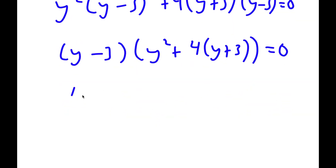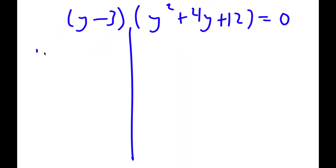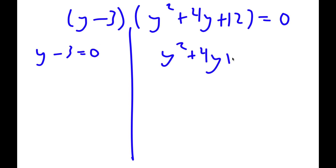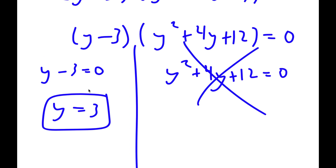From here, if I factor out y minus 3, I get y minus 3 times y squared plus 4 times y plus 3, which equals 0. Simplifying that gives y minus 3 times y squared plus 4y plus 12 equals 0. This gives me two equations: y minus 3 equals 0, and y squared plus 4y plus 12 equals 0. If you put the second equation in the quadratic formula, you get the square root of a negative number, so the only solution for y is y equals 3.